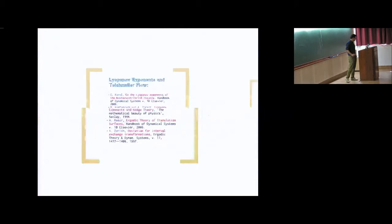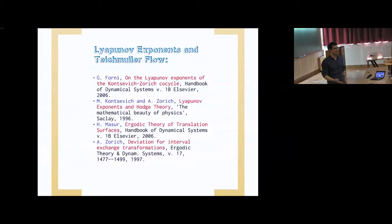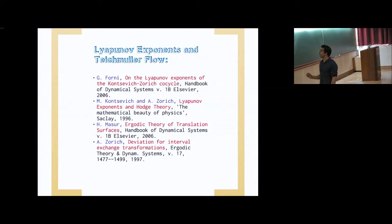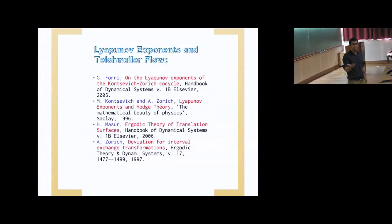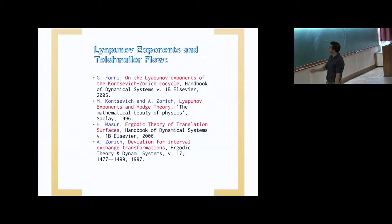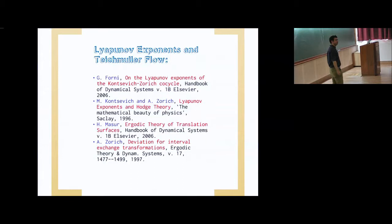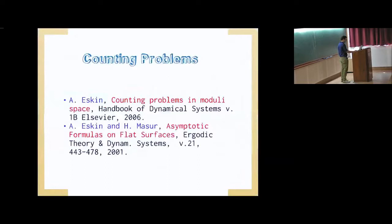I want to point you to some sources. None of these sources are state-of-the-art — the state-of-the-art is moving so fast in this subject. However, I still think these sources are incredibly important because they give you an idea of some of the basics. There's Giovanni Forni's beautiful survey in the Handbook of Dynamical Systems, this Kontsevich and Zorich paper, Howie Masur's beautiful paper in the same handbook edition, and Anton Zorich's original paper on the deviation for interval exchange transformations, which is really a masterpiece. For the counting problems, there's one by Alex Eskin and one by Eskin and Masur.